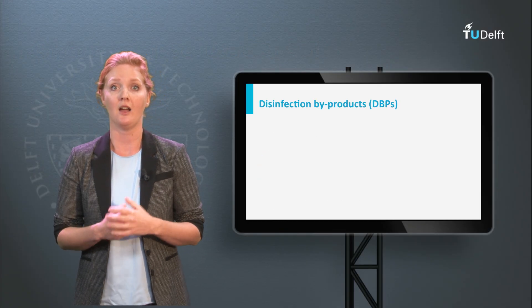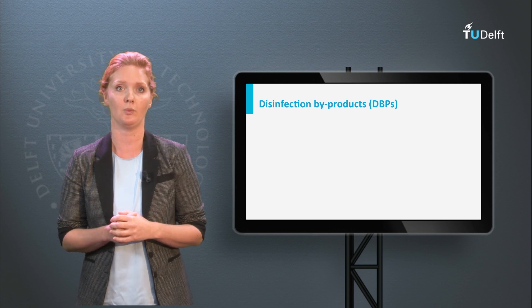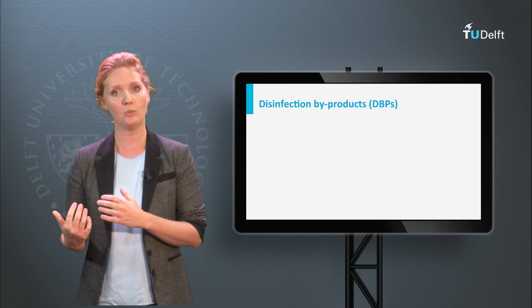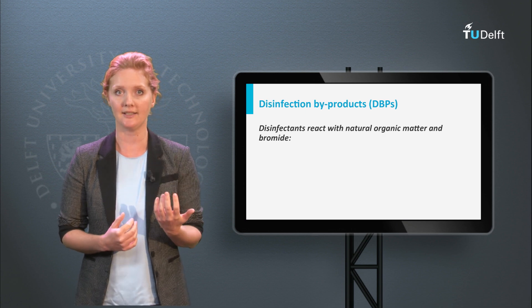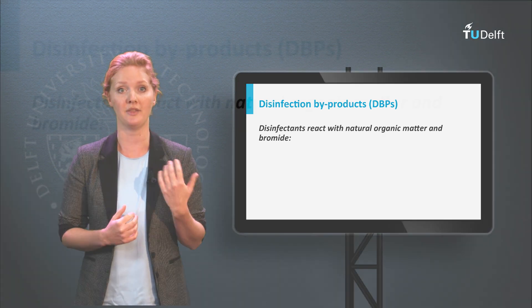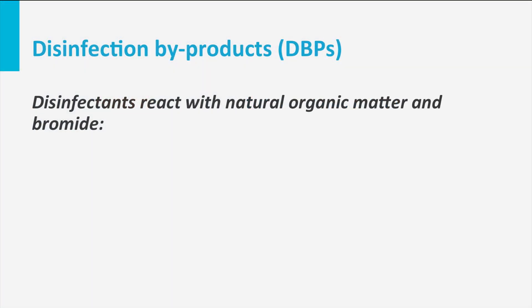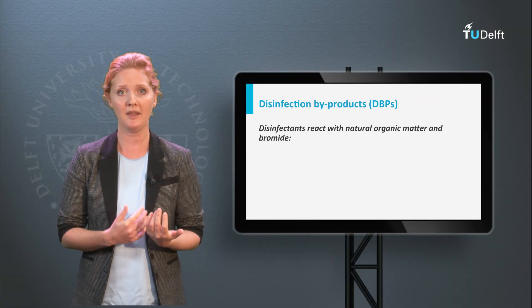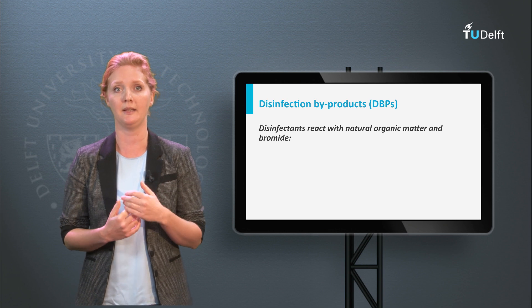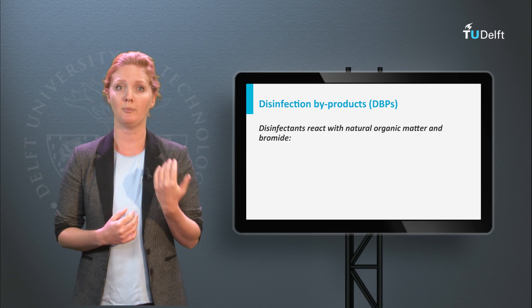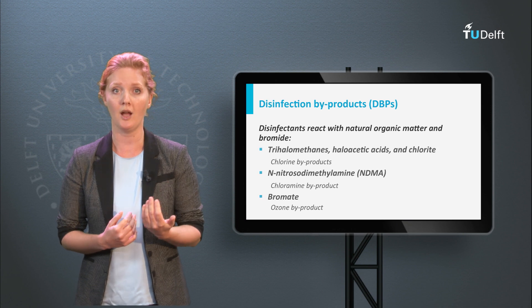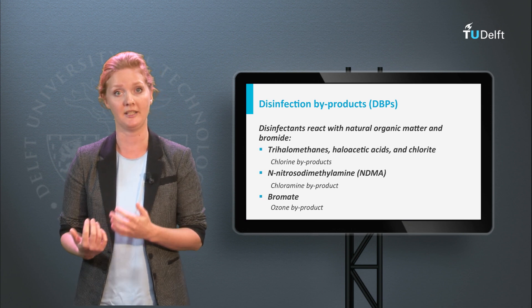Disinfection byproducts are originally not present in the source water, but enter the water during the treatment process for disinfection. Disinfectants react with natural organic matter or bromide in the water, resulting in carcinogenic byproducts. Trihalomethanes, NDMA and bromide are examples of disinfection byproducts, which are produced by chlorine, chloramine and ozone, respectively.